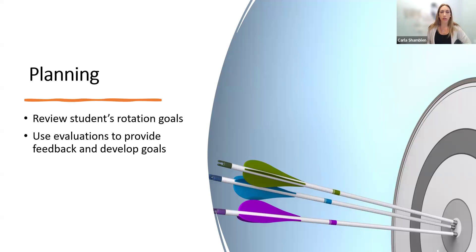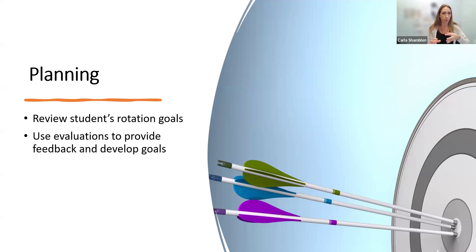As far as planning the types of encounters your student is going to see, one thing you can do is first look at their rotation goals — the syllabus and learning objectives — but also what are your student's individual rotation goals? You can then help pinpoint or identify certain encounters or types of patients to direct them to see. Specific and increased frequency of feedback helps enhance the effectiveness of this planning.